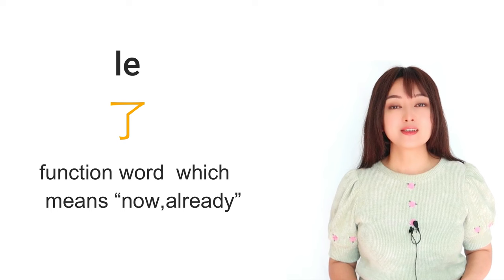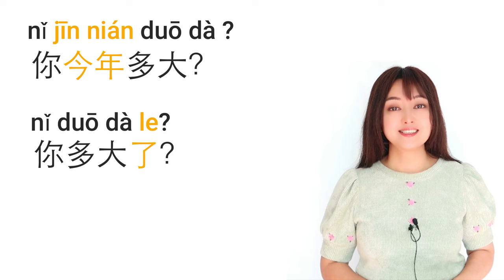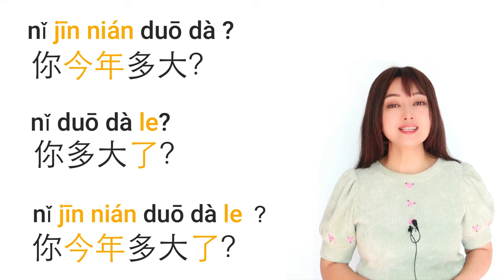So the variations are 你今年多大, 你多大了, and we can add both: 你今年多大了. Remember all these variations.